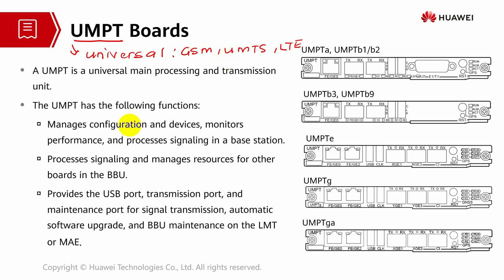The UMPT manages configuration and devices because it is the main control board — if this board is faulty, it can impact the whole site going down. It manages configuration, performance, and signaling of the base station, processes signaling, and manages BBU resources. It also provides a USB port, transmission port for software upgrades, and maintenance tools like LMT and MAE. There are different board versions with different technical specs, from UMPT A up to B2, with the latest being GA.